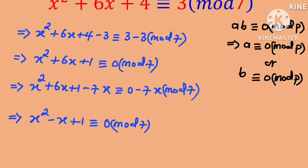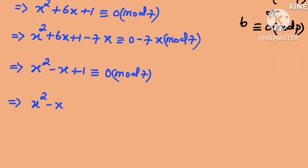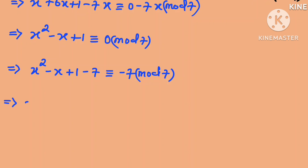The left hand side still cannot be factorized. It is important to note that whatever we add or subtract from both sides should be a multiple of 7, so that the right hand side remains 0. If we subtract 7 from both sides, we obtain x squared minus x plus 1 minus 7, which is congruent to negative 7 in mod 7. This implies that x squared minus x minus 6 is congruent to 0 in mod 7.